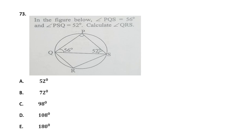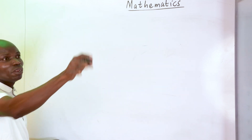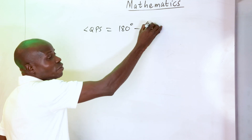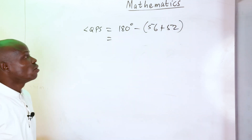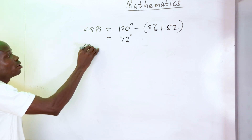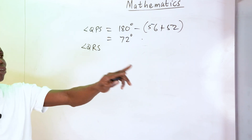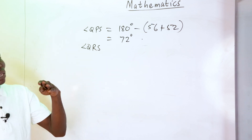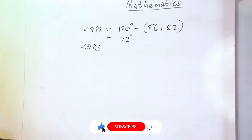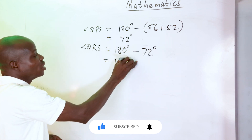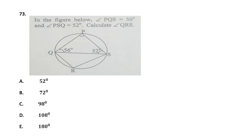Number 73: find angle QRS. First, angle QPS in the triangle equals 180 minus (56 plus 52) equals 180 minus 108, which is 72 degrees. Since quadrilateral QPRS is a cyclic quadrilateral, opposite angles are supplementary, so angle QRS equals 180 minus 72 equals 108 degrees. That makes option D correct.